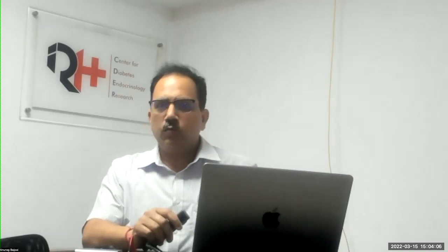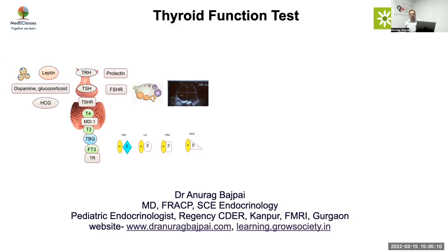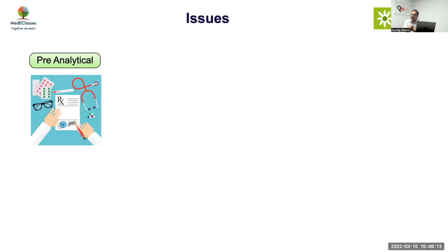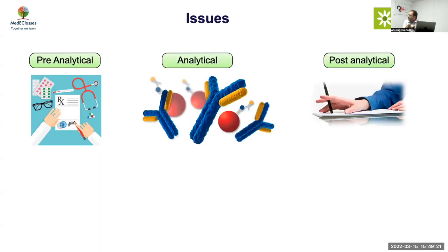This time we're going to focus on thyroid function assessment, especially typical issues — what can go wrong and what are the various factors we have to assess in evaluating thyroid functions. There are three areas where errors can occur when evaluating any function: pre-analytical, analytical, and post-analytical. The post-analytical area is where the maximum errors occur.